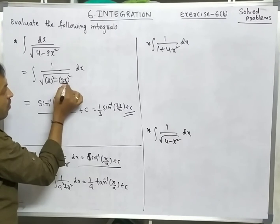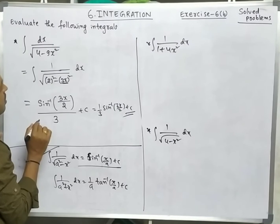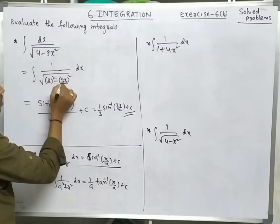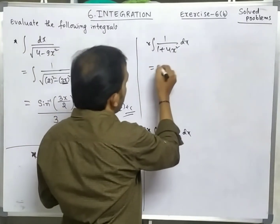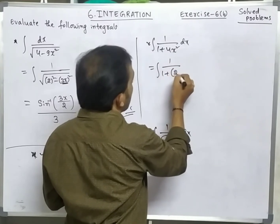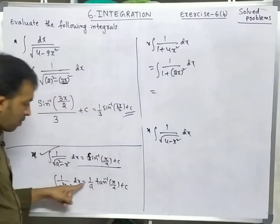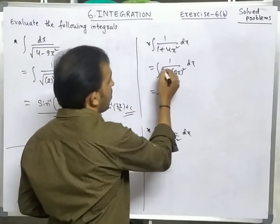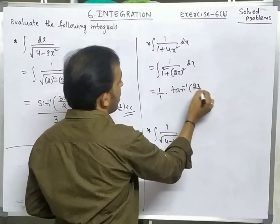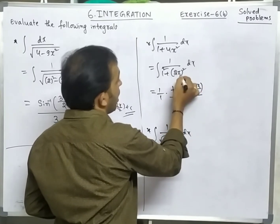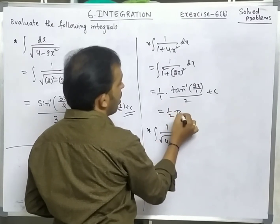Writing the coefficient of x in the denominator is the important thing — don't forget that. We can also solve by substitution, letting 3x = t. Next: 1/(1+4x²) = 1/(1+(2x)²). This is the form (1/a)·tan⁻¹(x/a), with a=1 and x replaced by 2x. Answer: (1/2)tan⁻¹(2x) + c.